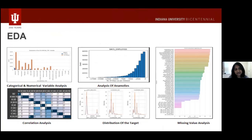The correlation analysis gives us cherry-picked features, for which we look at the categorical as well as the numerical variables and the distribution of the target. This lays the footing for our feature engineering.